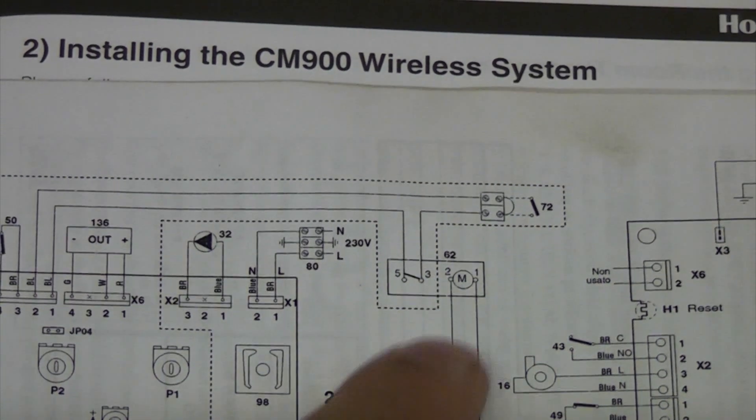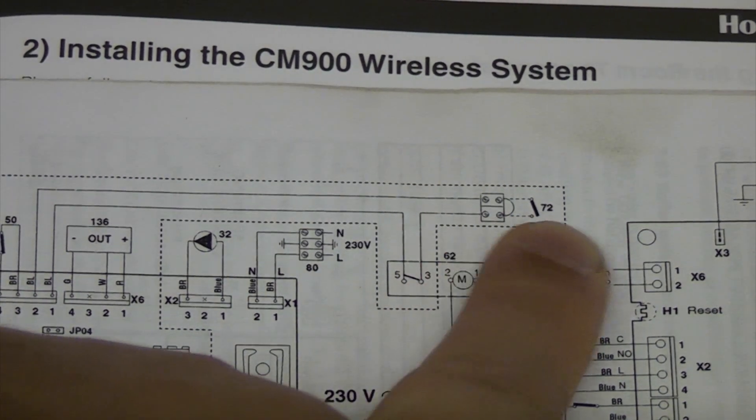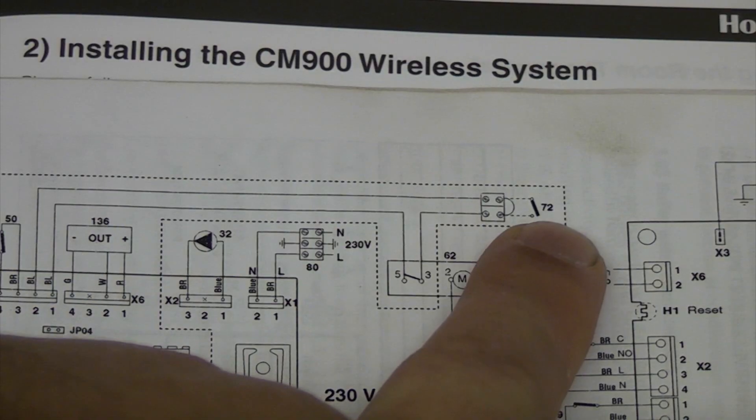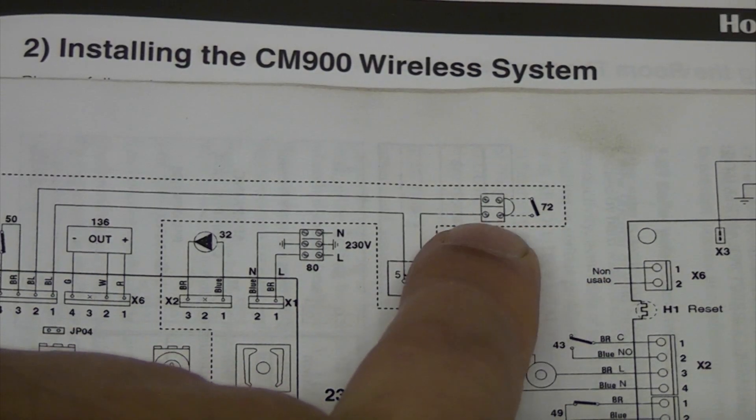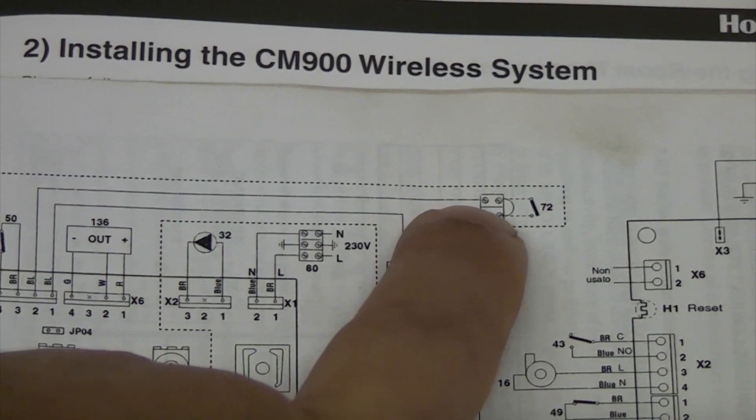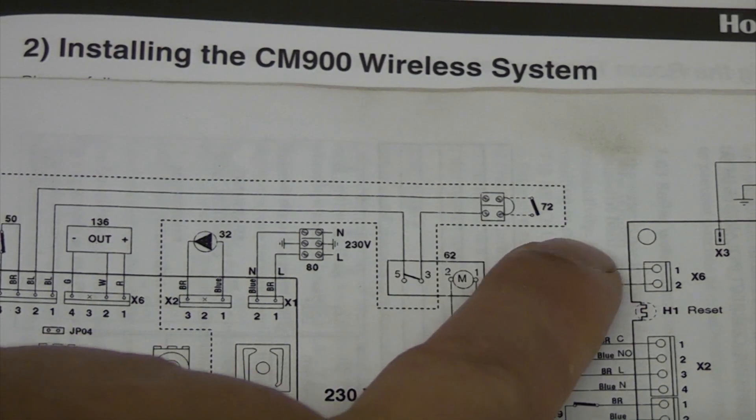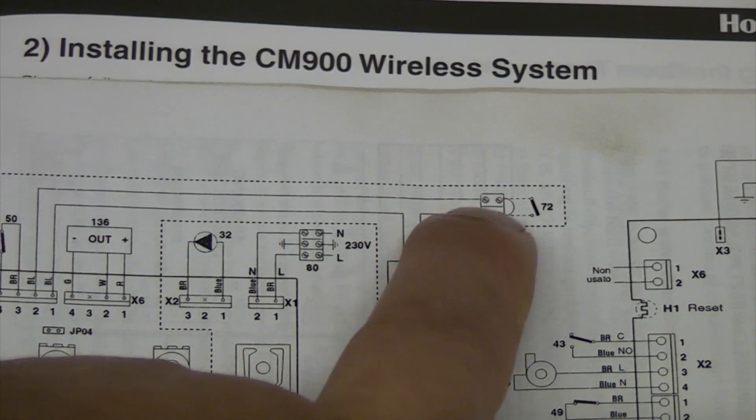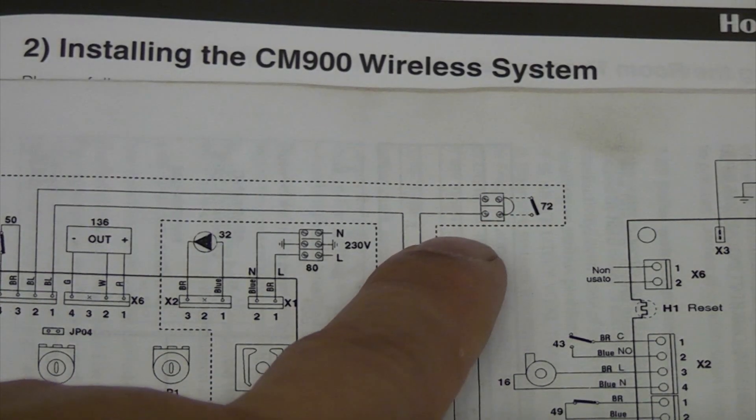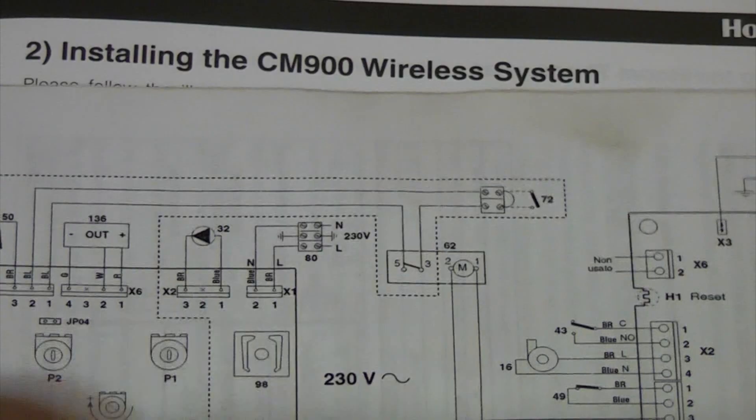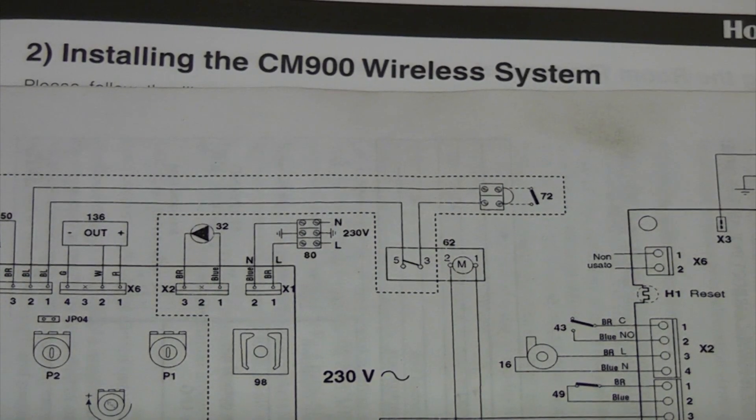So you can see there that that is terminal 72 there. So what we are looking for when we get in the boiler is a connector, and it should actually have a link in it, and what we will do is we will remove that link and then we will put one or two wires in there that are coming from the actual thermostat receiver, and that should be it. It is as simple as that.